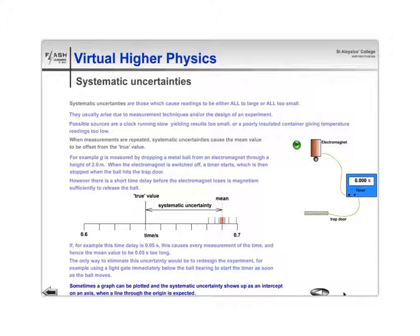So all of your readings would be clustered at too high a value somewhere around about here, where the true value might be somewhere down around about here. For example, if the time delay was 0.05 seconds, all of the readings would be too large by 0.05. So really you should eliminate this by redesigning the experiment.